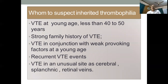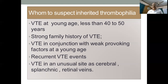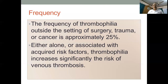When do you suspect a patient has thrombophilia? If your patient is young — less than 40 to 50 years — there's a strong family history, it has occurred at a young age with a very weak provoking factor, the patient had recurrent VTE again and again, or it is at an unusual site such as the brain, splanchnic vessels, or retinal vein — then you have to suspect the patient might have thrombophilia. Outside the setting of surgery, trauma, or cancer, thrombophilia accounts for approximately 25 percent of cases, and it can occur alone or along with acquired risk factors, significantly increasing the risk of venous thrombosis.